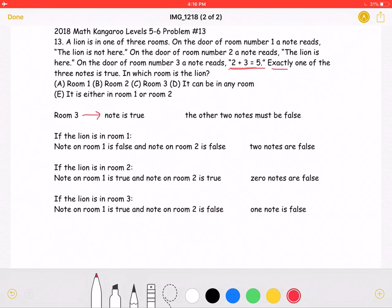The problem states that exactly one of the three notes is true. Now we just found out that the one note that is true is on room 3. This means that the other two notes must be false.